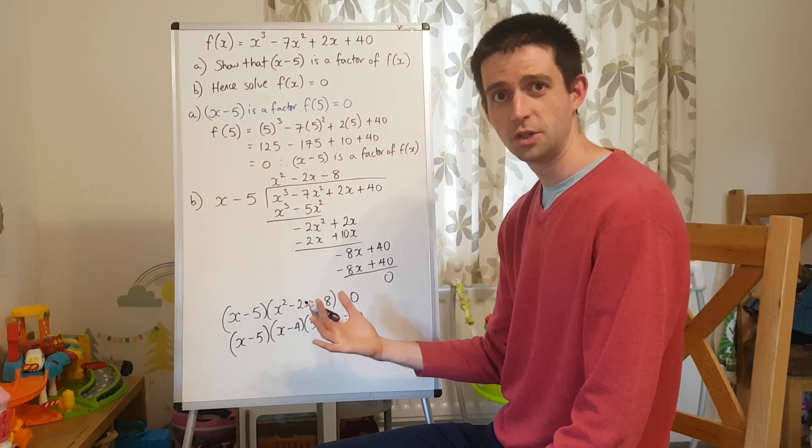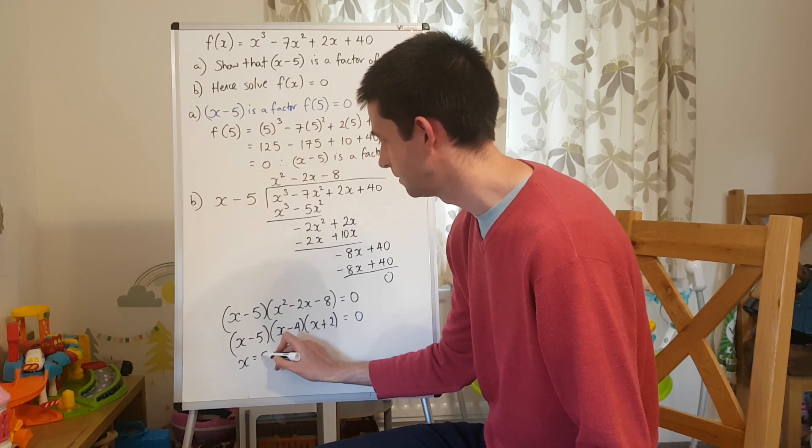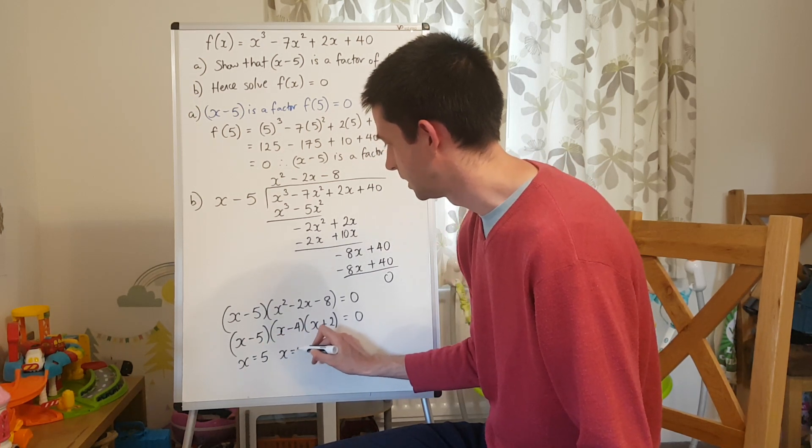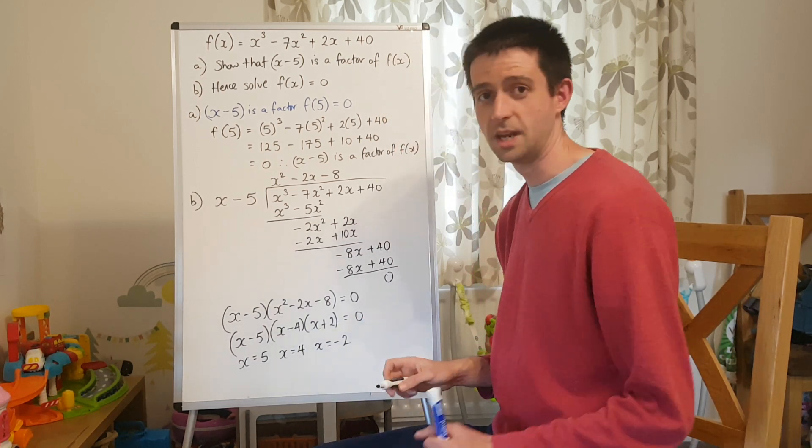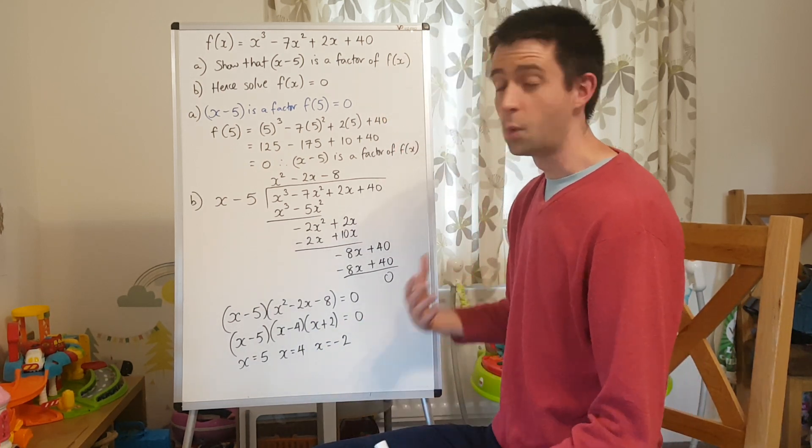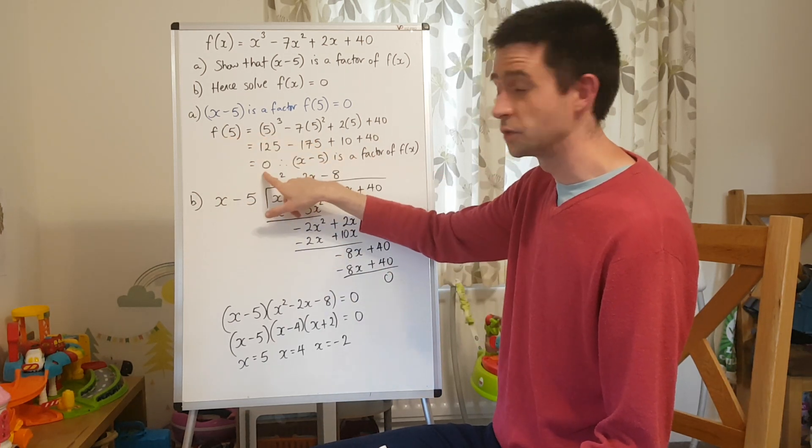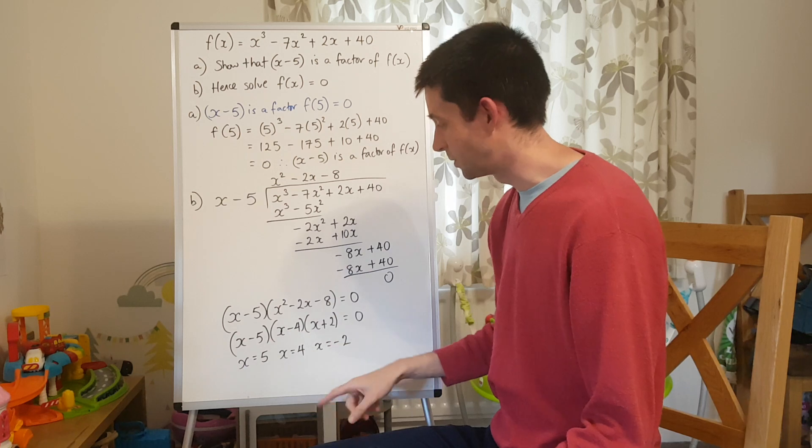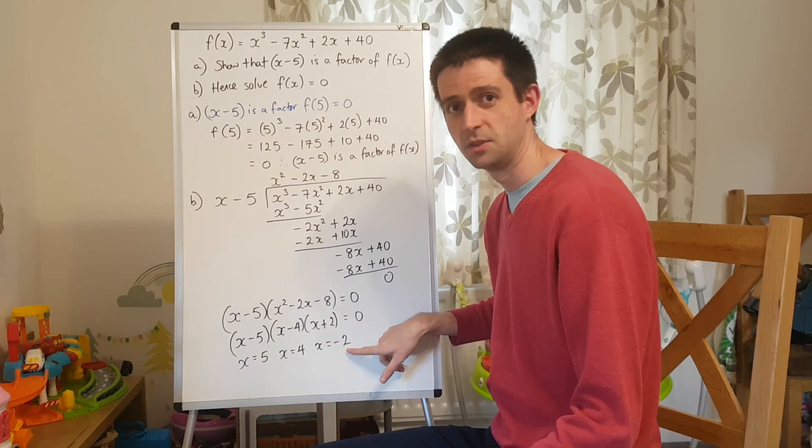And that gives me three solutions for f of x equals 0 in my cubic. The first is that x is 5, the second, x is 4, and the third, x is negative 2. And what that actually means is if I refer you back to part A, we subbed in 5, we got 0. We would also get 0 if we subbed in x is 4, or if we subbed in x is negative 2.